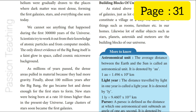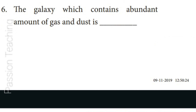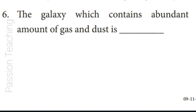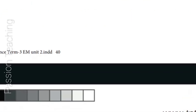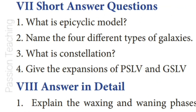Question 5: The only evidence of the Big Bang Theory — Answer: The only direct evidence of the Big Bang itself is a faint glow in space called Cosmic Microwave Background. Question 6: The galaxy which contains an abundant amount of gas and dust is — Answer: Irregular Galaxies. Question 7: Which country launched the world's first artificial satellite? Answer: Russia.